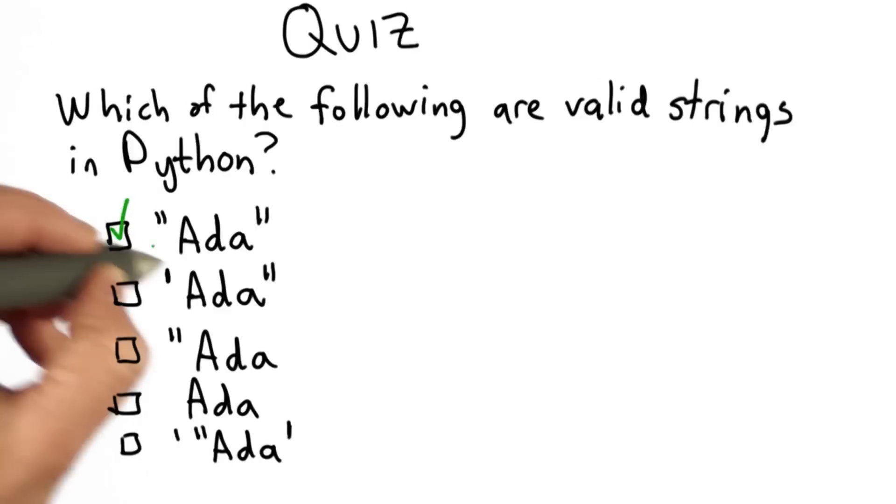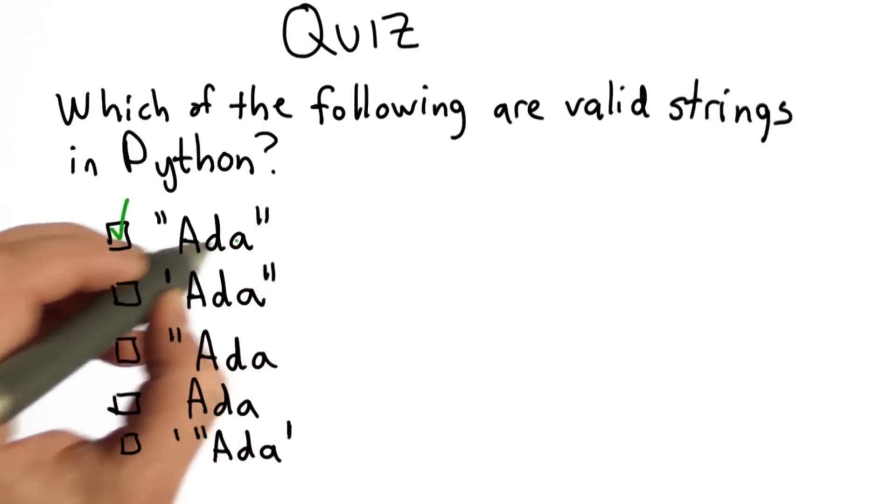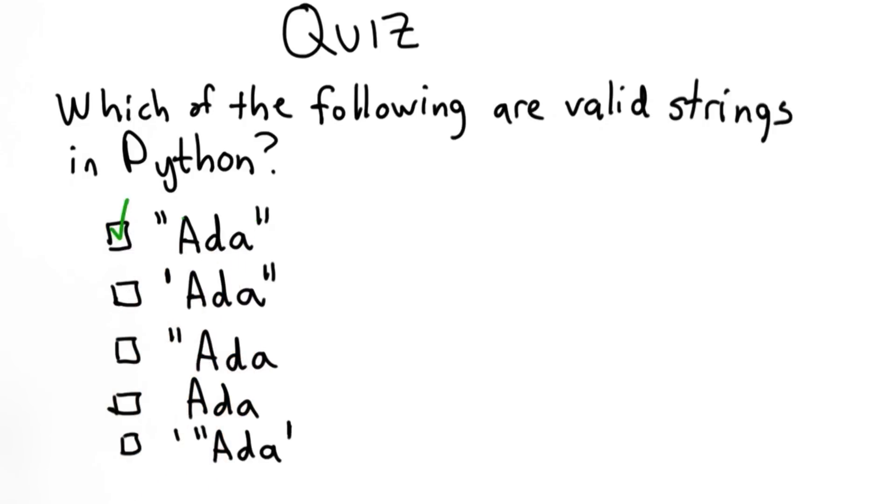So the answer, the first one is a valid string. It has a double quote, followed by another double quote, and a sequence of characters between the double quotes.